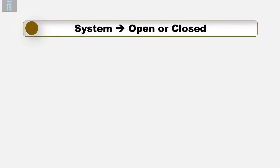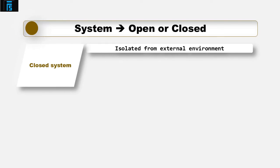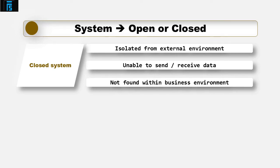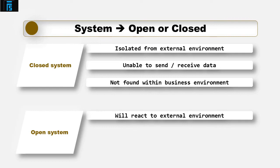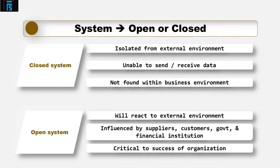A system — something that connects things up — can be either open or closed. A closed system is isolated from the external environment and data will not be provided to or received from the environment. Closed systems are very rarely found in naturally occurring situations, and within a business environment there is a real need to communicate and react to the external environment just in order to survive. As such, business organisations are open systems. The decisions they make will be influenced by suppliers, customers, maybe government or financial institutions. By having an open system, a business can focus on the external factors critical to the success of the organisation and adapt to the changing environment as necessary.